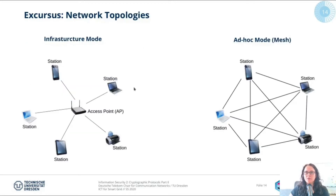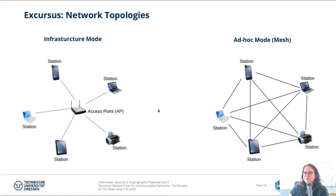For this, I'm going to do an excursus. On the left you see the infrastructure mode with an access point in the middle and stations — clients — around it. The access point has a clearly defined purpose: managing the network. In the ad-hoc mode, also called mesh networks, you don't have this managing instance. Every station is connected to other stations directly. This is the main difference, and as you see in the ad-hoc network, we have to make it possible for devices to connect over a secure link.